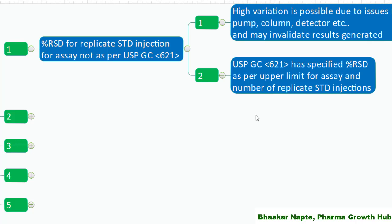High variation is possible due to issues in the pump, column, detector, etc., and may invalidate results. Setting a suitable percent RSD for replicate standard injections is very much needed. Refer to USP General Chapter 621 — based on your upper assay limit and number of replicate standard injections, you will be able to identify the appropriate percent RSD for your case.